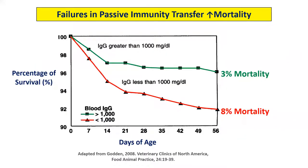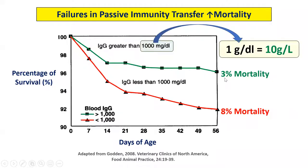To show some evidence: this survival curve shows that calves with IgG concentration in serum below 1,000 mg/dL had 8% mortality — the red line — while calves with better passive immunity transfer had only 3% mortality — the green line. Another way to define this benchmark is 10 grams per liter, which we will discuss shortly.